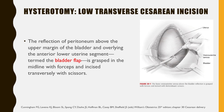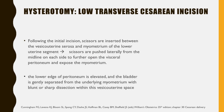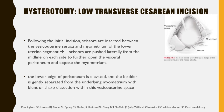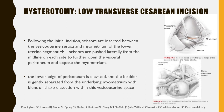For the low transverse cesarean incision, the reflection of the peritoneum above the upper margin of the bladder and overlying the anterior lower uterine segment — called the bladder flap — is grasped in the midline with forceps and incised transversely with scissors. Following the initial incision, scissors are inserted between the vesico-uterine serosa and myometrium of the lower uterine segment, then pushed laterally on each side to expose the myometrium. The lower edge of the peritoneum is elevated and the bladder is gently separated from the underlying myometrium with blunt or sharp dissection.